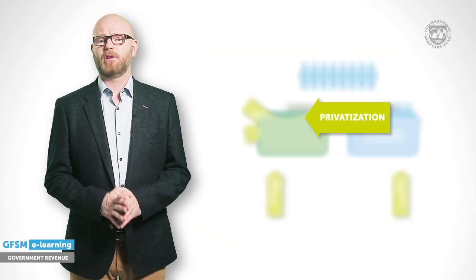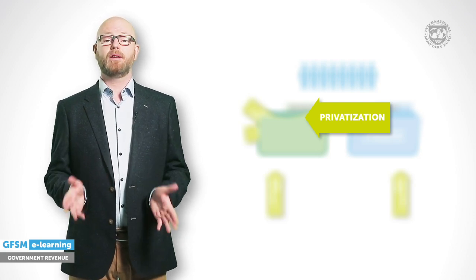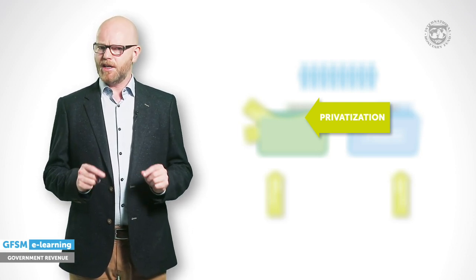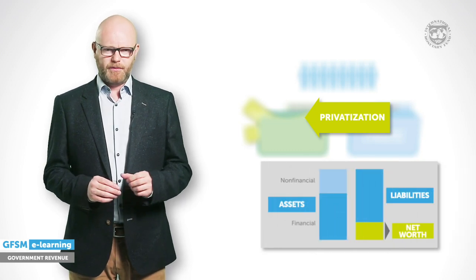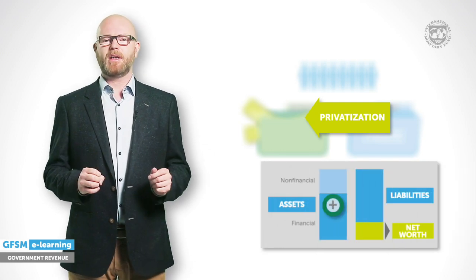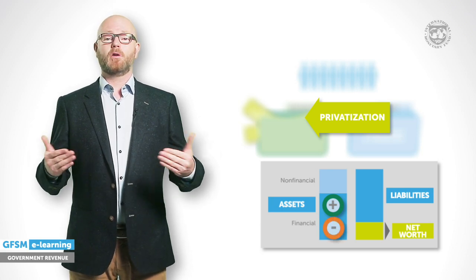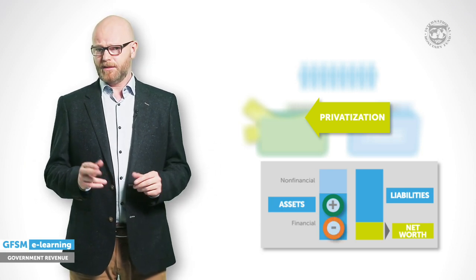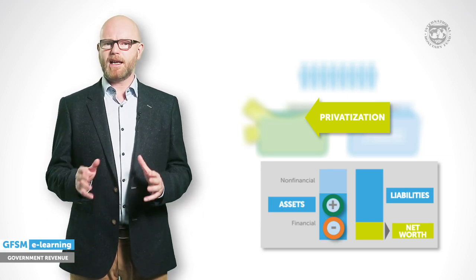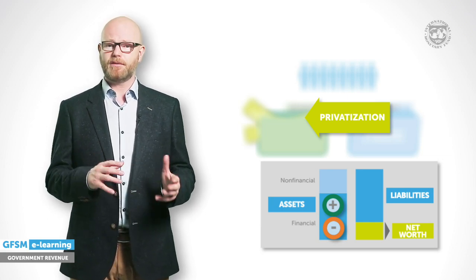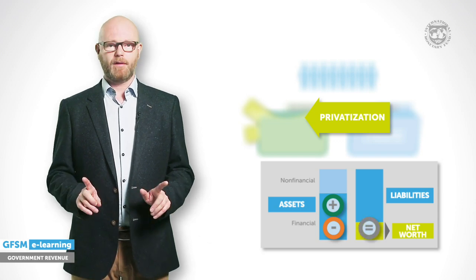The privatisation proceeds also stir some debate because many staff are inclined to interpret this as profit and thus revenue. But here, the GFS definition settles the debate quite easily. One type of financial assets — the cash received from the sale — increases, but at the same time another type of assets, shares in the public corporation, are sold. Thus a so-called financial transaction is recorded: the disposal of a financial asset in exchange for the receipt of another financial asset. Net worth remains unchanged — no revenue is recorded.